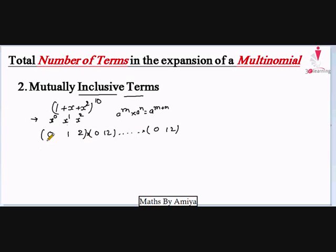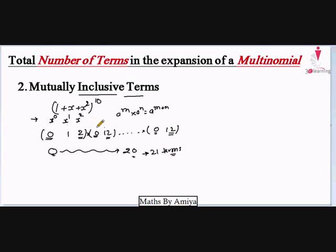The lowest power is the sum of the lowest powers from all bundles — 10 zeros — so the lowest sum is 0. The maximum sum is the sum of the maximum powers: maximum power is 2 in each of the 10 bundles, giving a maximum of 20. So we have total powers from 0 to 20, which means 21 terms. The direct formula for this maximum number of terms is 2 times 10 plus 1, where 2 is the maximum power in the bracket and 10 is the overall power, giving 21.